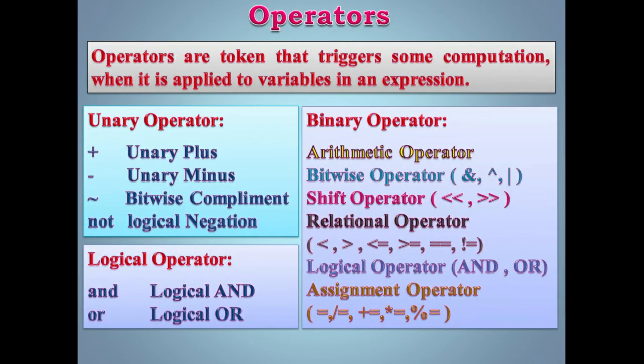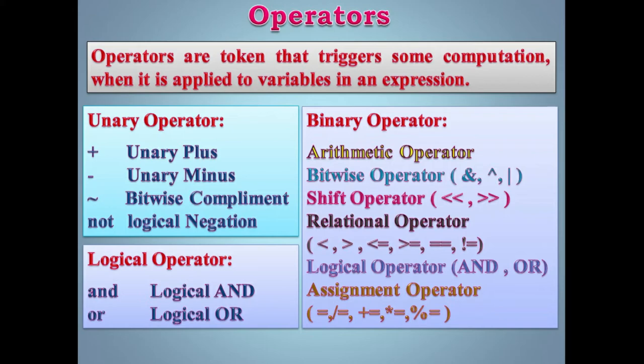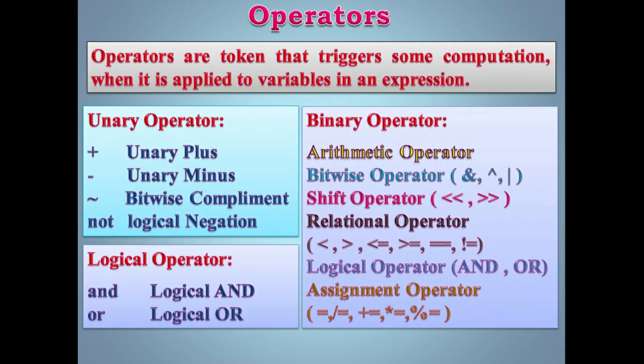Operator — all the tokens that trigger some computation. Operator ko hum log computation karne ke liye use karte hain. Computation means calculation — jaise 10 + 2 = 12, that is computation. Uske liye hum log operator use karte hain, jaise plus — it is an arithmetic operator. There are different types of operators available in Python.